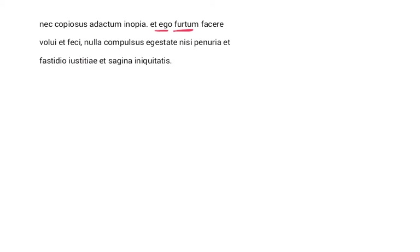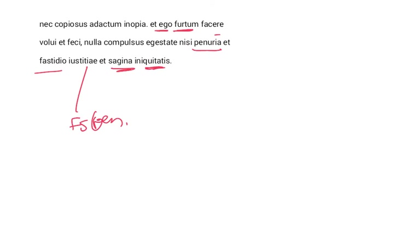He says, except by a penuria — that's another ablative — and a fastidio of justice: a poverty and a contempt for justice. So he was lacking in justice and lacking in respect for justice, and this would be an objective genitive, feminine singular genitive. What was he compelled by? A lack and a disregard for justice. And he was compelled by a surfeit — a being stuffed or filled with iniquitatis — a full abundance or supply of wickedness. This is what drove him to the theft, the furtum, which he highlights by placing himself directly next to it.